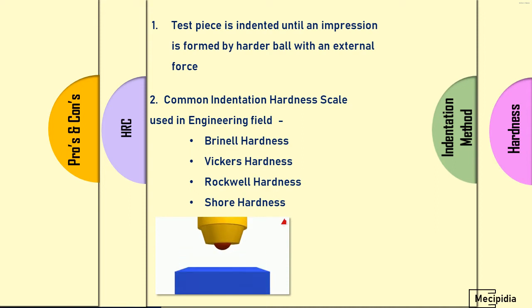There are four indentation hardness scales used in the engineering field: Brinell hardness, Vickers hardness, Rockwell hardness, and Shore hardness. In this video we will see about Rockwell hardness in detail.